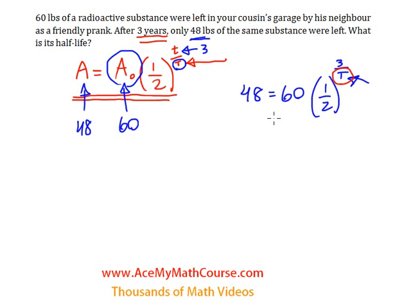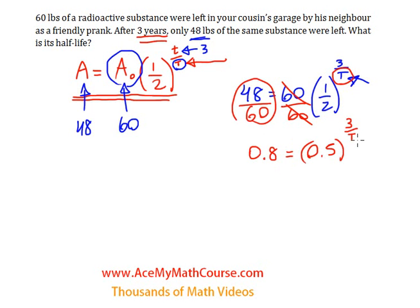My first step will be to divide both sides of the equation by 60. So we get 48 divided by 60, and I'll reduce that to 4 over 5 or 0.8. So 0.8 equals, and for aesthetic purposes I'm going to rewrite the half as 0.5 to the power of 3 over big T.